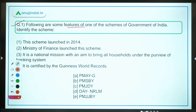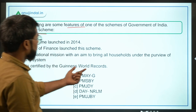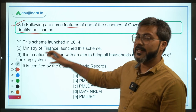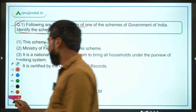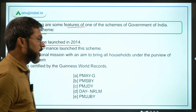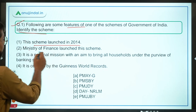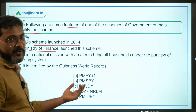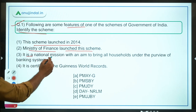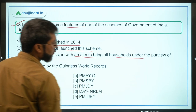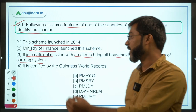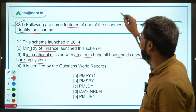The first question asks you to identify a government scheme based on its features. There are four statements given. The scheme was launched in 2014 — many schemes were launched that year, so we can't identify it from this alone. It was launched by the Ministry of Finance — again, too broad. But the third statement says it is a national mission aimed at bringing all households under the purview of the banking system.